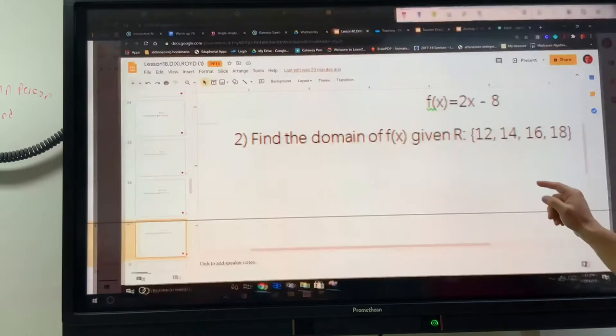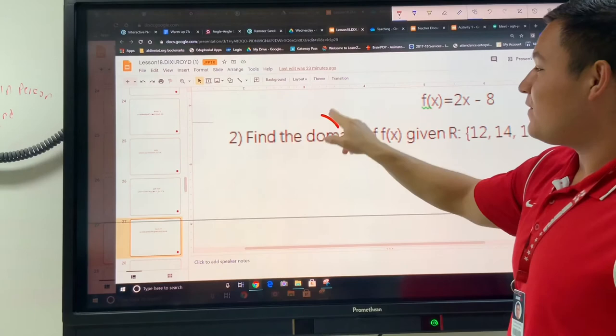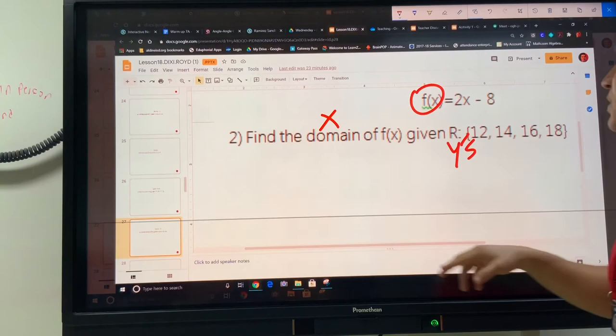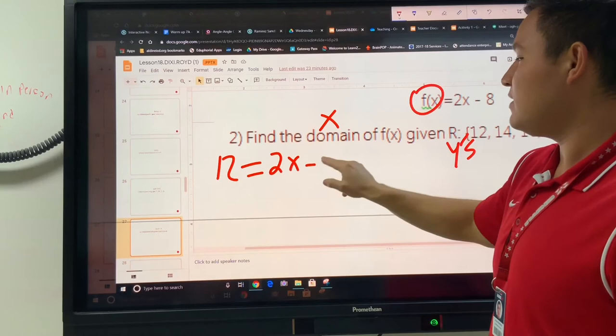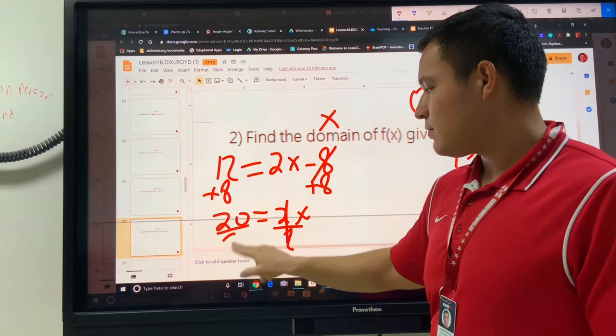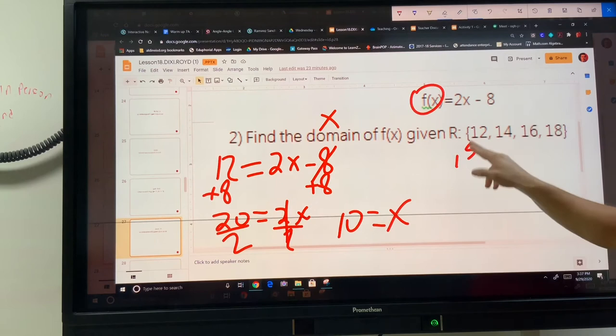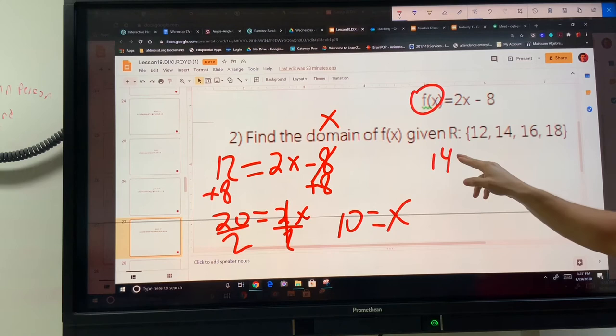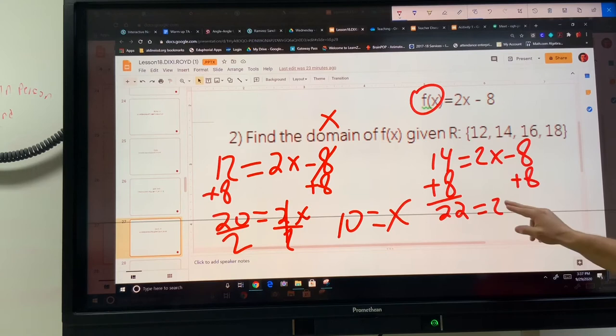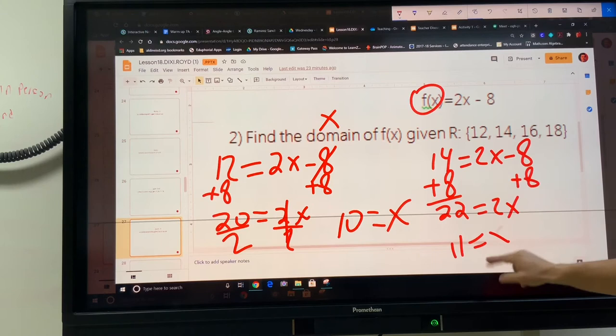Let's do it again. They gave you the range, you need to find the domain. If we're finding the domain, we're finding x. If they gave you the range, these are the y's. So we're going to take all of that and put these numbers one by one. 12 equals 2x minus 8. We're going to add 8. 20 equals 2x. Divide by 2. 10 equals x. 14 equals 2x minus 8. Let's add 8 to get 22 equals 2x. If you divide both of these by 2, 2 fits into 22 eleven times.